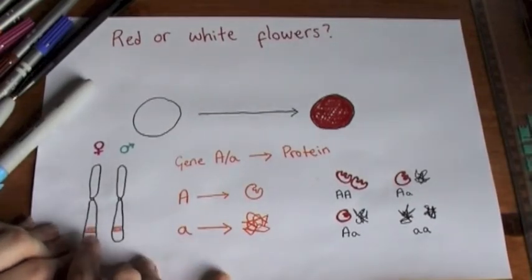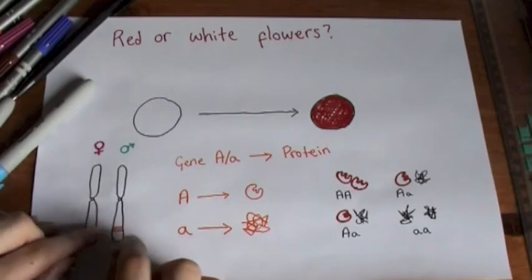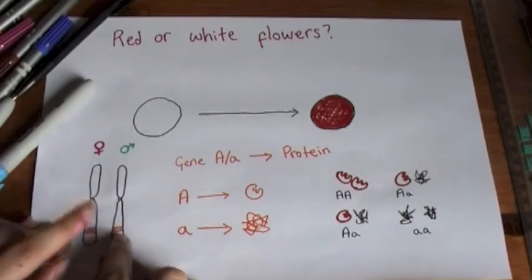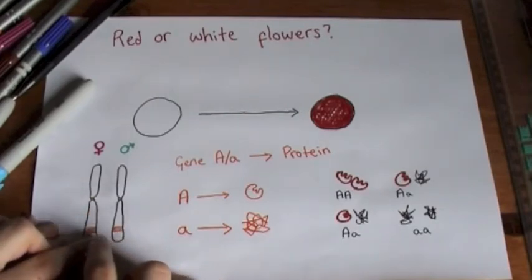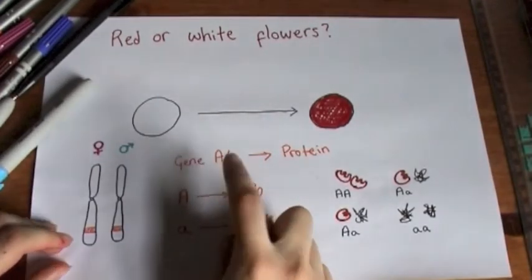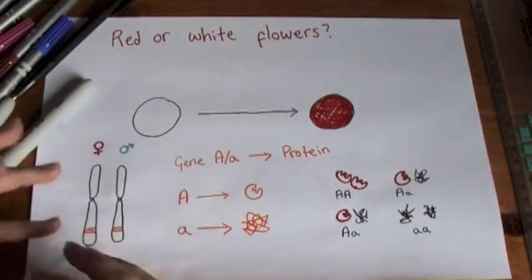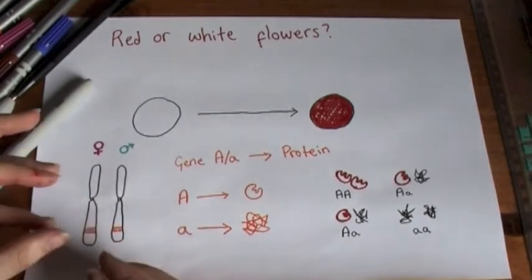So although both your chromosomes have the A gene there, maybe this one has big A and maybe this one has little a. And these are just terms, so big A, little a, or whatever letter it happens to be, is just a way of saying that version of the gene, so this allele.